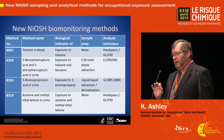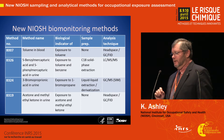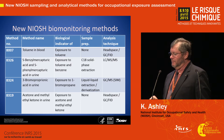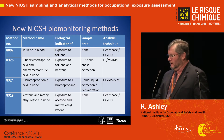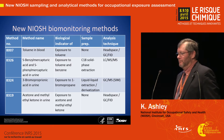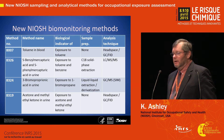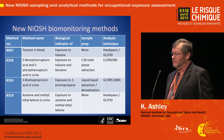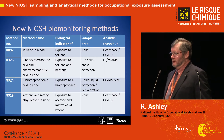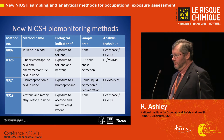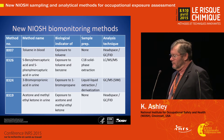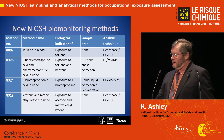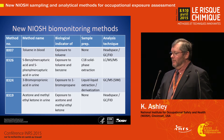We have a number of new biomonitoring methods that have been released and others that are in the pipeline. A few examples include toluene in blood, and various biomarkers in urine that can be used to assess exposures to things such as toluene, benzene, 1-bromopropane, and MEK. A lot of these methods have been in the pipeline for a long time and we're doing our best to actually get them released to the public.